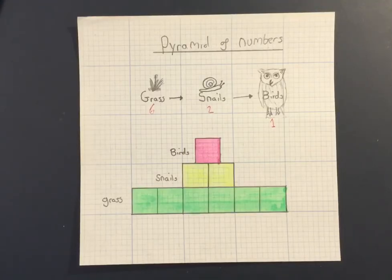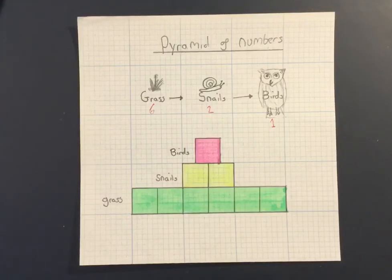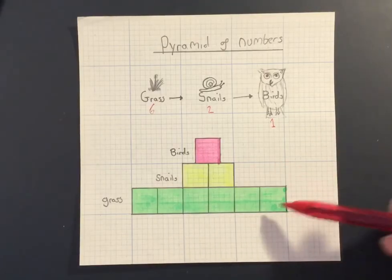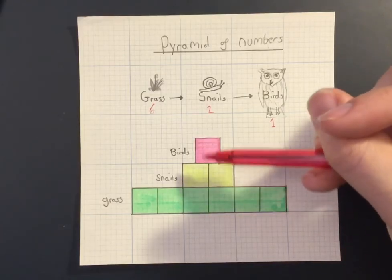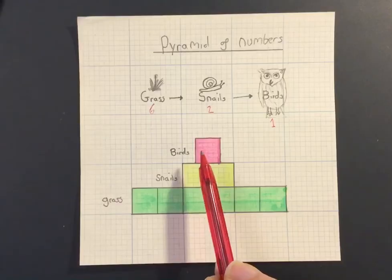But it doesn't show the amount of energy, because the amount of energy as you go up the food chain is getting less as energy is lost. Organisms are doing things like moving or respiring, excreting, growing, and that's using energy. So the amount of energy that is going from here to here, it's getting less. There'll be lots of energy here, not much, and then even less.